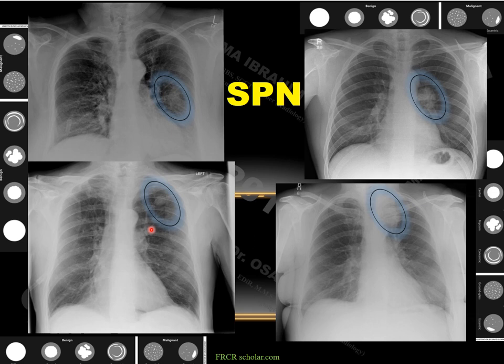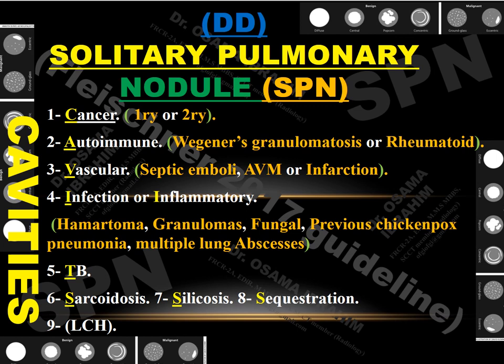What are the causes of solitary pulmonary nodules, and how can we discriminate malignant from benign? The differential diagnosis can be remembered by the word CAVITIES: Cancer (primary or secondary), Autoimmunes (Wegener's or rheumatoid), Vascular (septic emboli, AVM, or infarctions), Infection and Inflammations (hematoma, granuloma, fungal infections, viral, abscess), TB, Sarcoidosis, Silicosis, Sequestration or Langerhans cell histiocytosis.